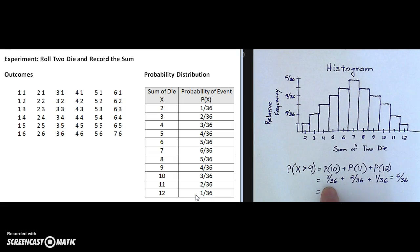Those relative frequencies were 3/36, 2/36, and 1/36, which add to 6/36 and reduces to 1/6.